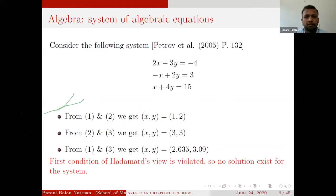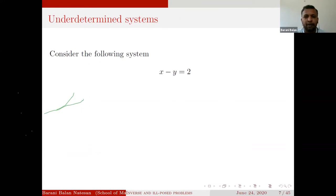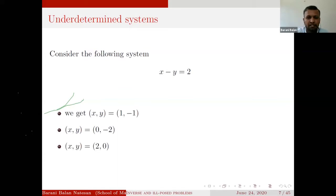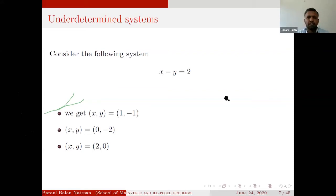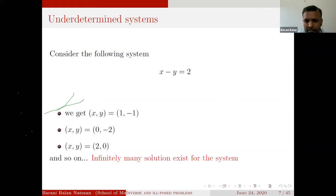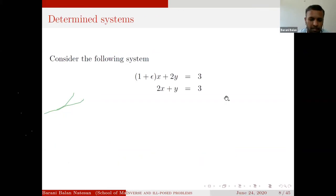Now consider an under-determined system. When you look at the equation, say x - y = 2, you will get infinitely many solutions: (1, -1), (0, -2), (2, 0) — these are all solution pairs. So solution exists (first condition is valid), but the second condition — uniqueness — is not valid. Because there are infinitely many solutions, the second condition of Hadamard is violated, and the problem is ill-posed.